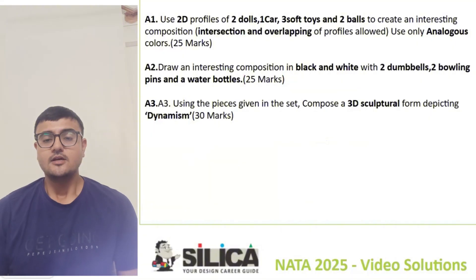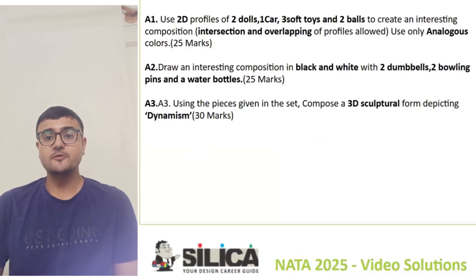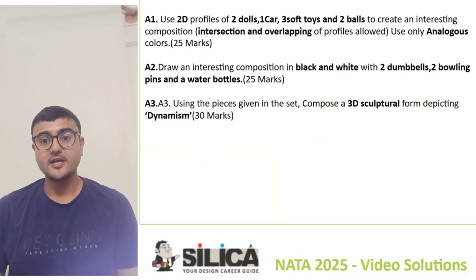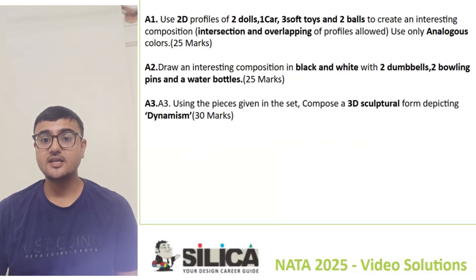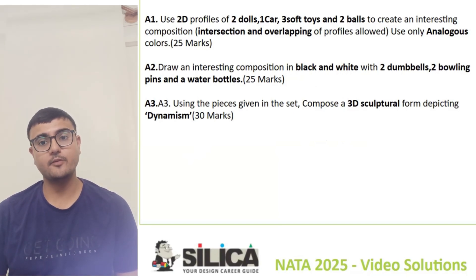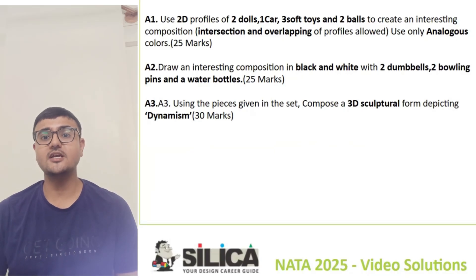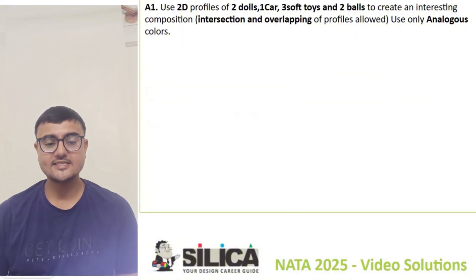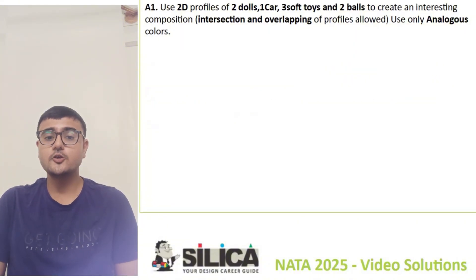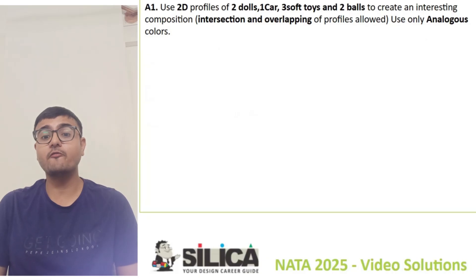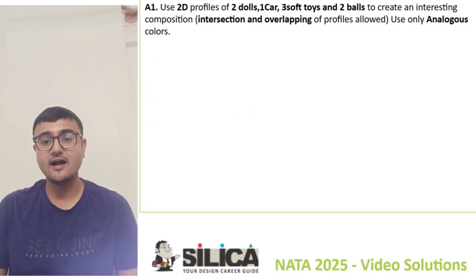In Part A, the A1 question is about 2D composition using color, the A2 question is about 3D composition using light, shade and shadow with black and white medium, and the A3 question is about 3D composition using a given toolkit. Let's discuss each question in detail.